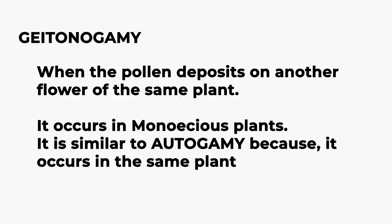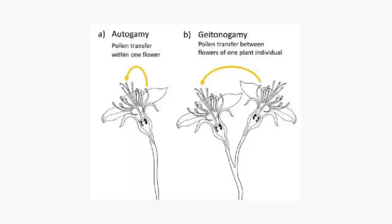When pollen deposits on another flower of the same plant, it is called geitonogamy. It occurs in monoecious plants. Functionally it is cross-pollination, but it is similar to autogamy because pollen deposits on the stigma of the same plant. These flowers are genetically identical.